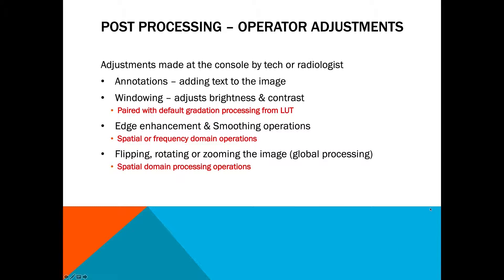Post-processing is what you're familiar with — adjustments made at the console by the technologist or radiologist. The first thing you usually do is annotate by adding text to the image, like if you forgot your marker or need to add patient positioning notes. Then you adjust the brightness and the contrast by windowing: window level controls brightness, window width controls contrast, and this is paired with the default gradation processing from the lookup table. Edge enhancement and smoothing are two other operations that the radiologist performs, and those can be accomplished in either the spatial domain or the frequency domain.